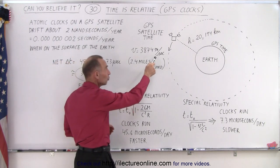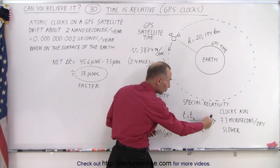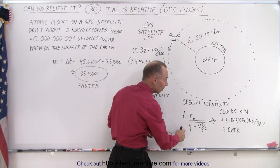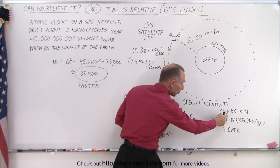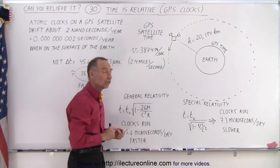And so it turns out that because of this enormous speed of the satellites, that the time difference, using this equation right here for special relativity, we then can calculate that the clocks run 7.3 microseconds per day slower.